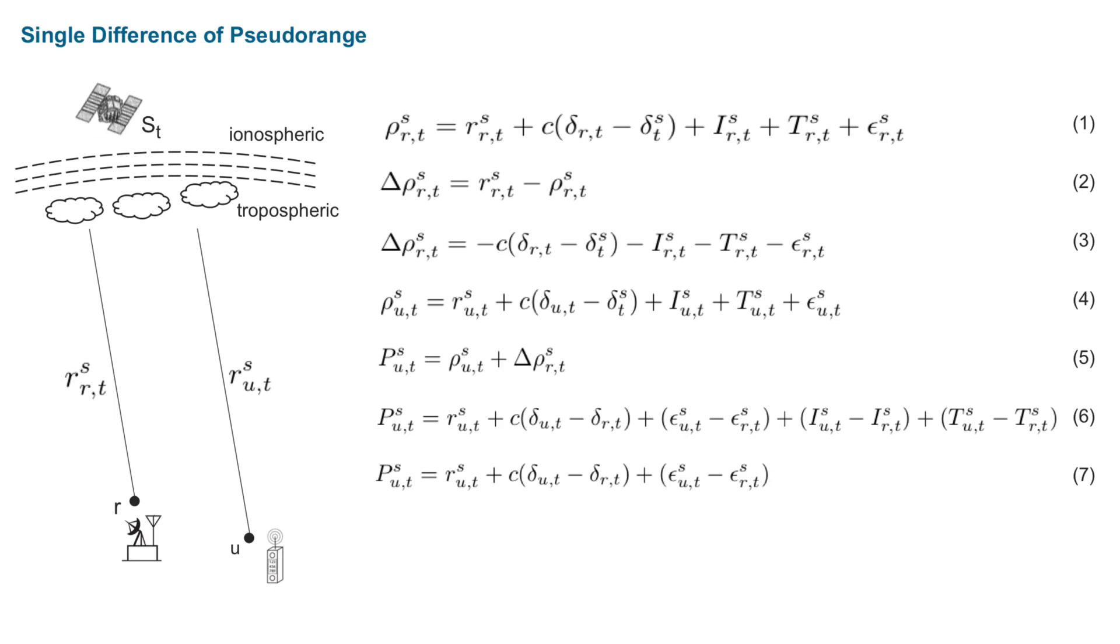From this slide, I will introduce how the losses are designed. Here I listed the equations to calculate the single difference of pseudo-range. I think you are quite familiar with it. For example, with formula 7, we can solve the position and clock bias by using WLS method.